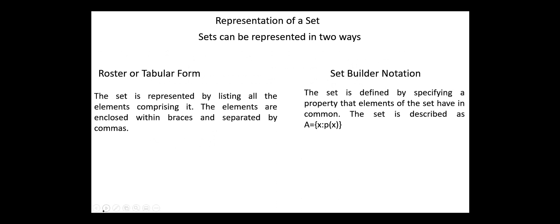Next, representation of a set. Sets can be represented in two ways: roster or tabular form, and set builder notation. In roster form, the set is represented by listing all the elements comprising it. The elements are enclosed within braces and separated by commas. For example, the set of odd numbers less than 10 is {1, 3, 5, 7, and 9}.